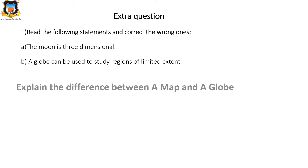Read the following statements and correct the wrong ones. I'm not going to tell you the answer here. There are two sentences. First: 'The moon is three-dimensional' — state whether it is right or wrong, and if wrong, correct the statement. Second: 'A globe can be used to study regions of limited extent' — is it right or is it wrong? Think about it and write the answers on your own.